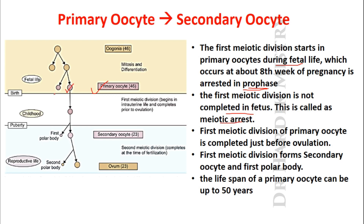The first meiotic division of the primary oocyte is not completed in fetal life; it continues throughout childhood and is completed just before ovulation. As soon as the first meiotic division is completed just before ovulation, it forms the first polar body and a secondary oocyte containing 23 chromosomes with a single X chromosome.